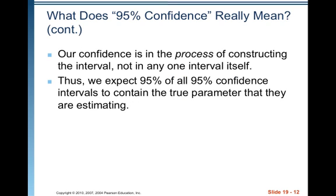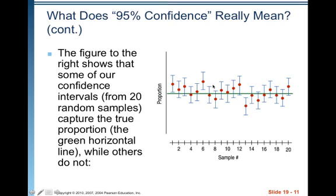Our confidence is in the process of constructing the interval, not in any one interval itself. We expect 95% of all 95% confidence intervals to contain the true parameter they are estimating. If we had thousands of intervals, 95% would capture the true proportion and 5% would not. That's what 95% confidence means — if we keep using the same method.